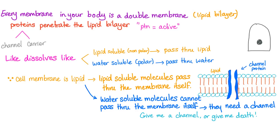Every membrane in your body is actually a double membrane with an inter-membrane space — a lipid bilayer. It's like Hinduism teaches that every life is an afterlife and every birth is a rebirth; medicine teaches us that every membrane is a double membrane. Proteins penetrate the lipid bilayer — there are channel proteins that span the whole length. The rule in chemistry is 'like dissolves like': if you're lipid-soluble, you're non-polar and can pass freely through the lipid membrane. If you're water-soluble or polar, you cannot pass through the lipid bilayer.